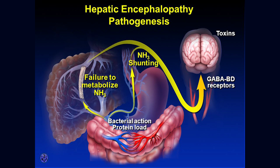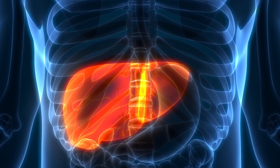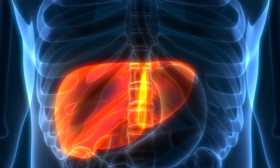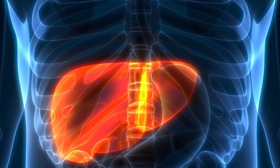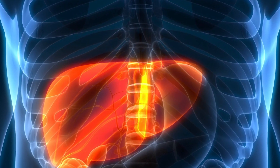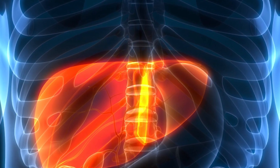Hepatic encephalopathy is an altered level of consciousness as a result of liver failure, and it can occur in those with acute or chronic liver disease. The underlying mechanism is believed to involve the buildup of ammonia in the blood, a substance normally removed by the liver. In healthy subjects, nitrogen-containing compounds from the intestine, generated by gut bacteria from food, are transported by the portal vein to the liver, where 80 to 90 percent are metabolized through the urea cycle and excreted immediately. This process is impaired in hepatic encephalopathy either because the hepatocytes are incapable of metabolizing the waste products or because portal venous blood bypasses the liver through a collateral circulation.